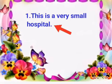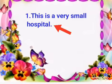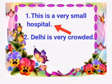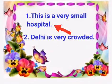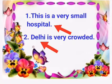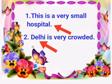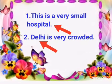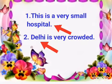Now, come to the second: Delhi is very crowded. So, here, Noun is Delhi because it is the name of a city.